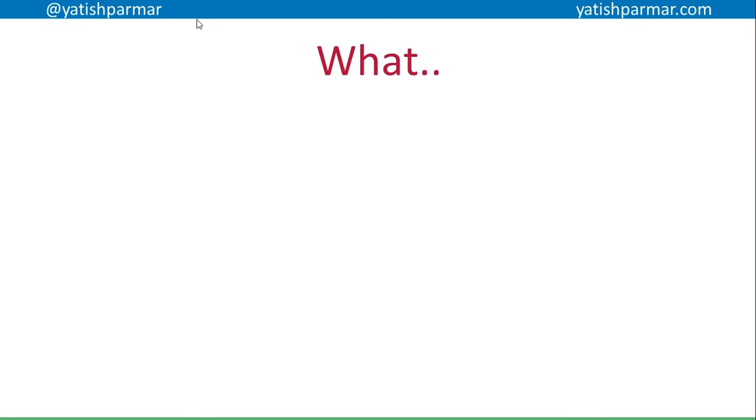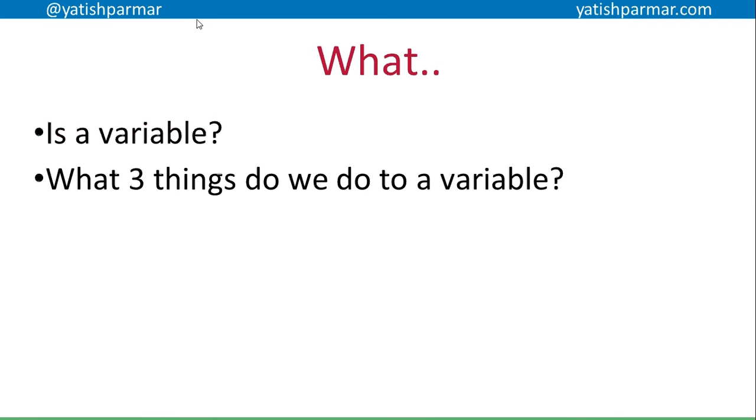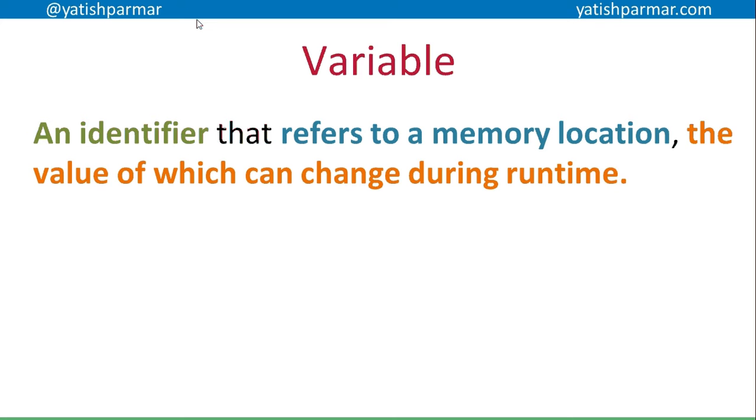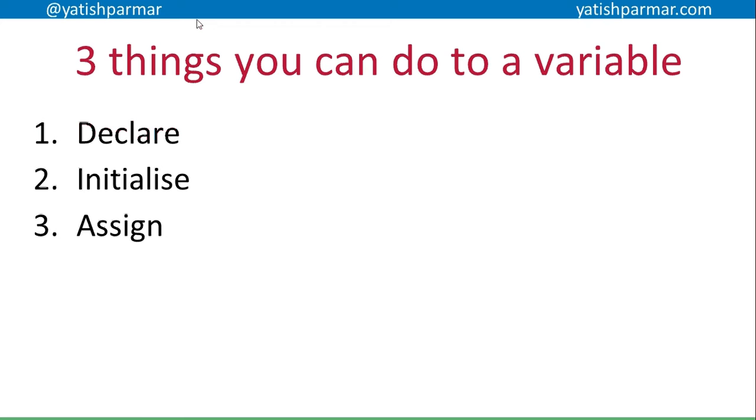Before we look at what an array is, let's remember what a variable is and what three things you can do to a variable. A variable is an identifier which points to a memory location, and the value stored in that memory location can change during runtime. This is different to a constant, which has a fixed value during runtime. The three things you can do to a variable: declare it, initialize it, and assign various values to it while the program is running.